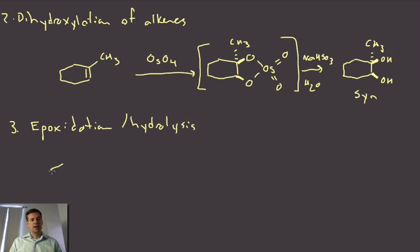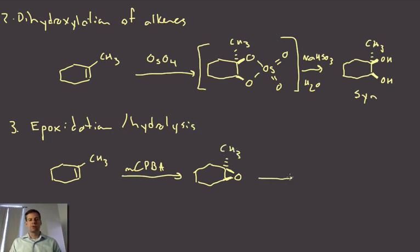So what we're going to do in this case is to take our alkene, we will epoxidize it. So remember MCPBA. That will give us our epoxide. And then what we'll do is to open that up. So we'll do an aqueous hydrolysis.